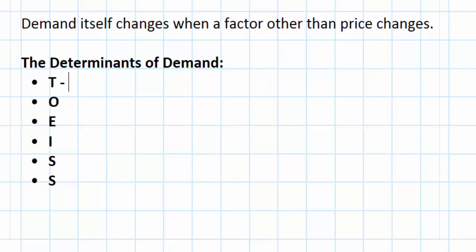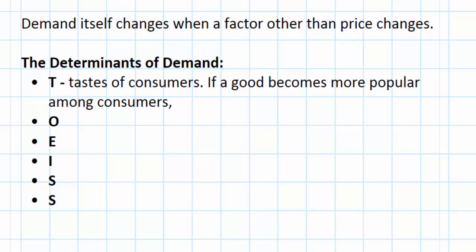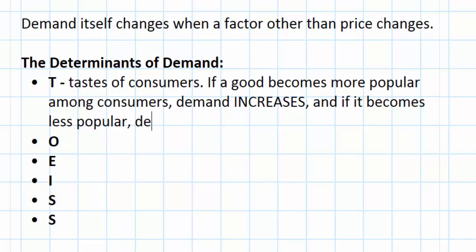The T stands for tastes of consumers. This is a very simple concept. If a good becomes more popular among consumers, demand increases, and if it becomes less popular, demand decreases. So what can affect the popularity of a good? Let's look at candy, for example.